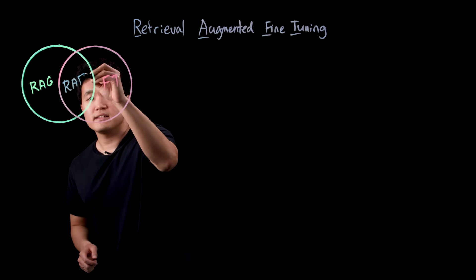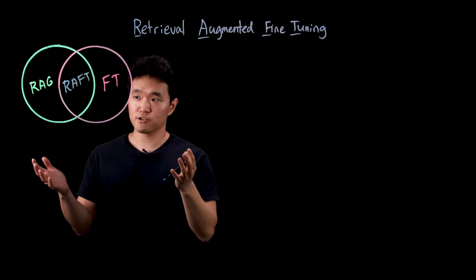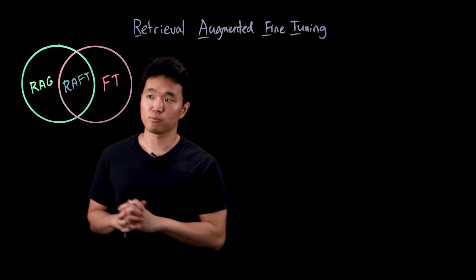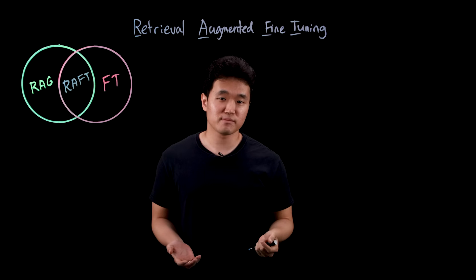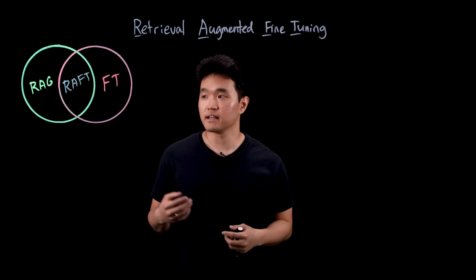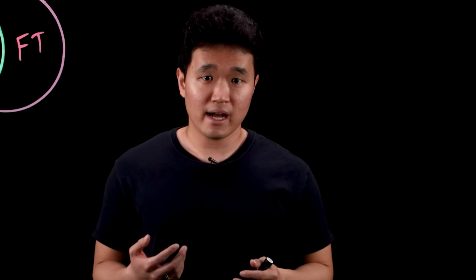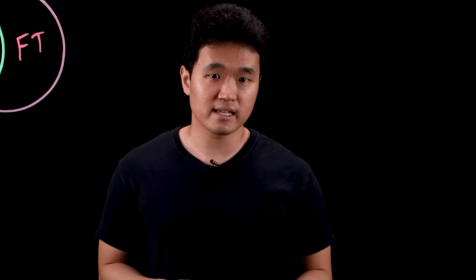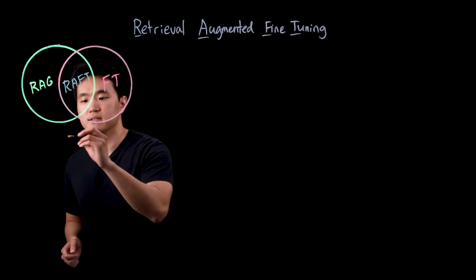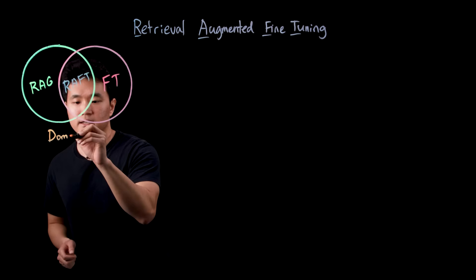Retrieval augmented fine-tuning is a hybrid approach that combines the best of both worlds and addresses many of the challenges surrounding LLM performance in specialized settings. Originally developed by researchers at UC Berkeley, RAFT uses a unique fine-tuning technique to improve RAG performance in specific domain contexts.